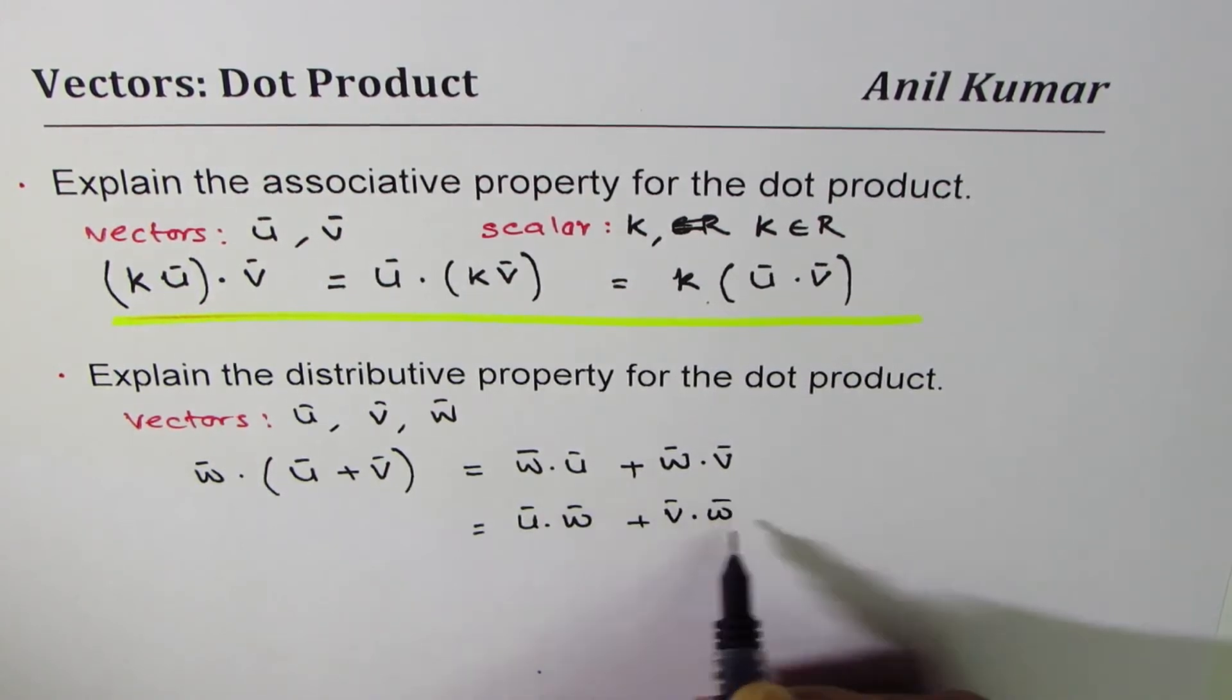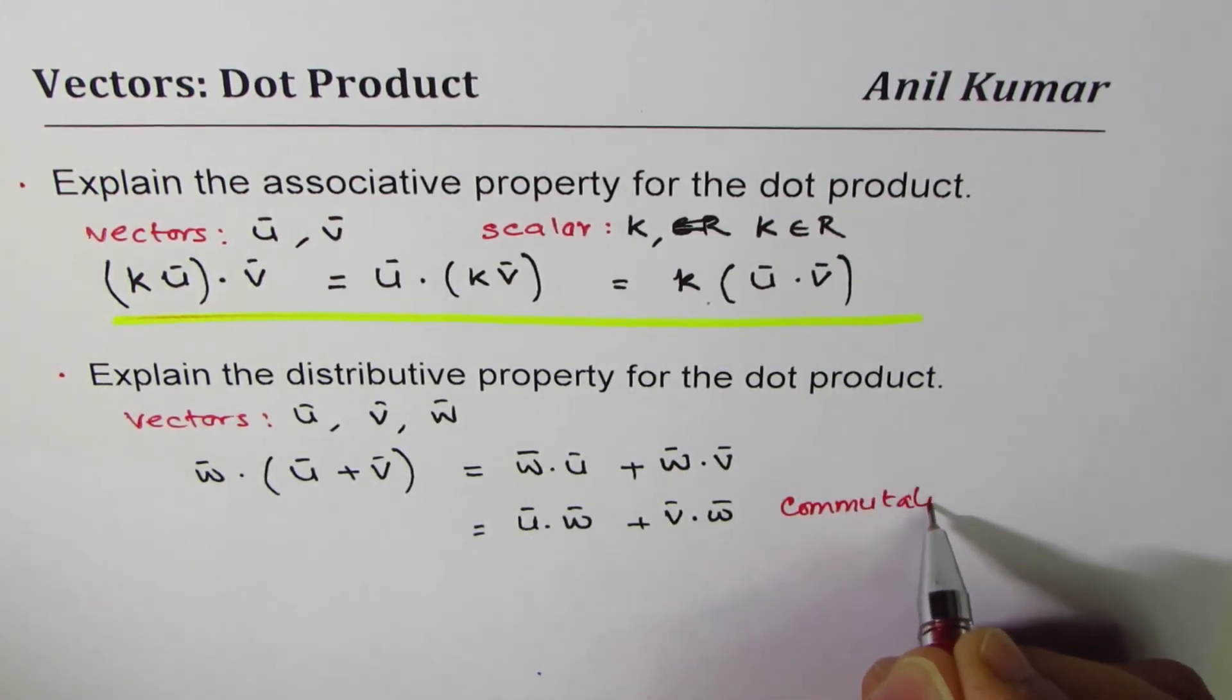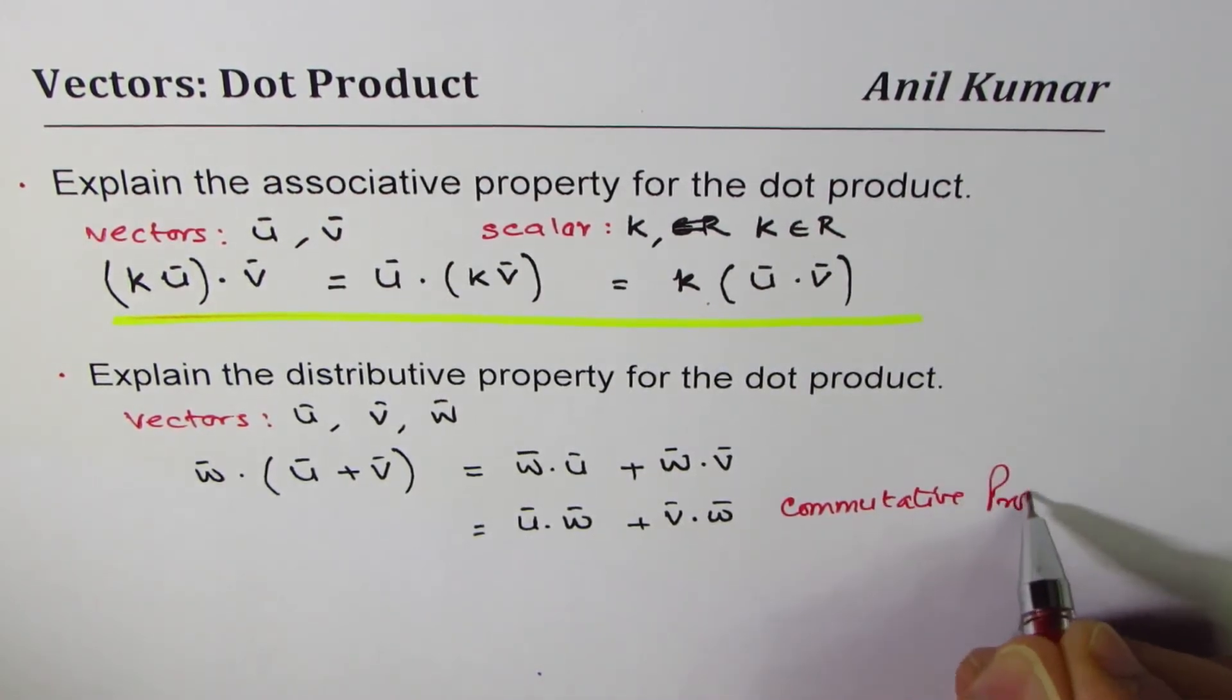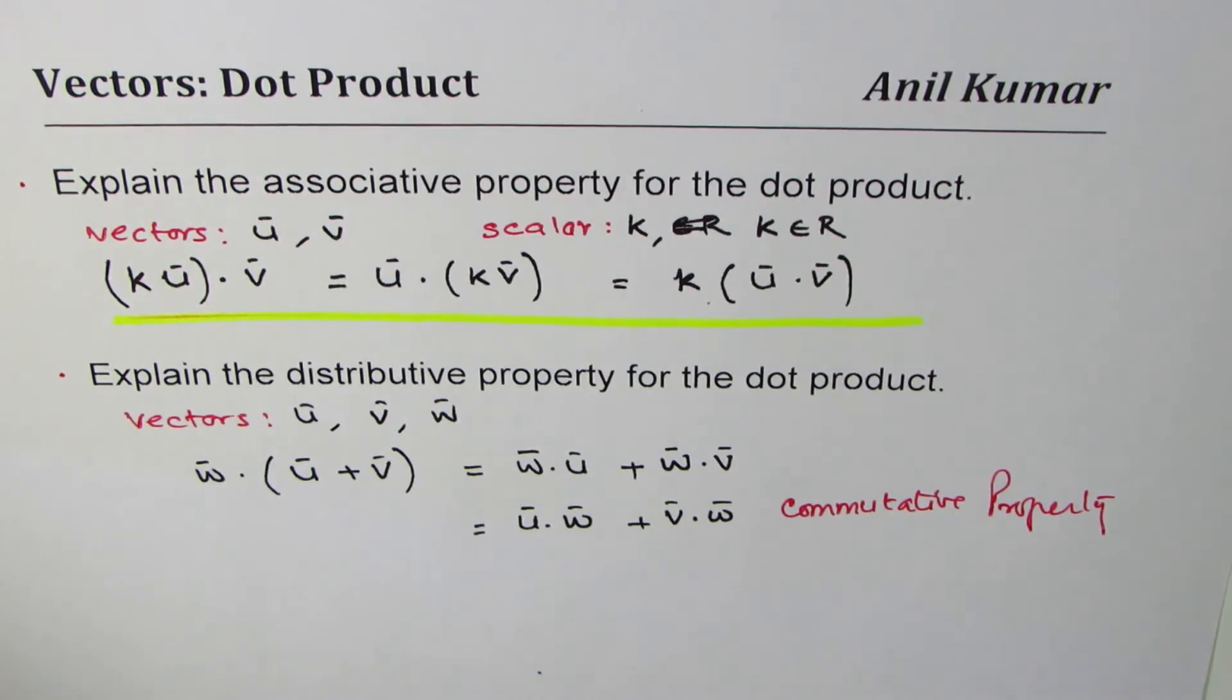The order doesn't matter - this is actually the commutative property. All right, so the order really doesn't matter. So what we're trying to say here is that...